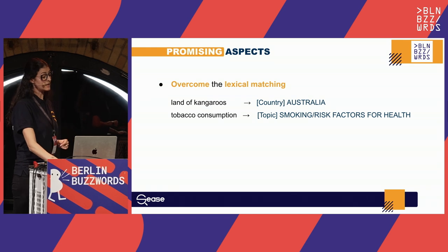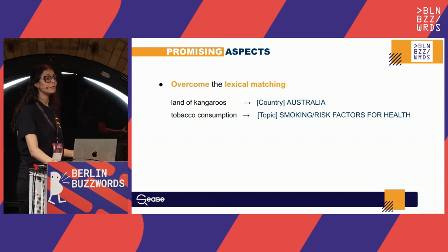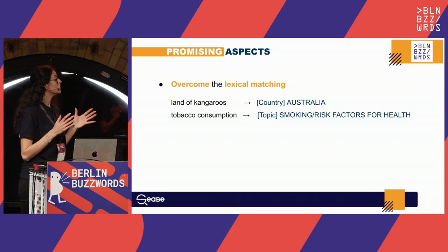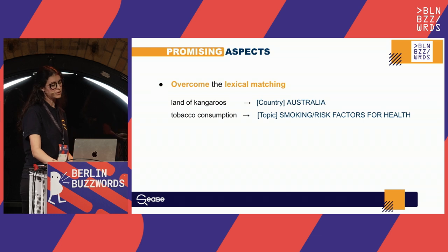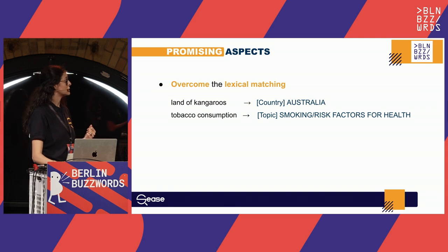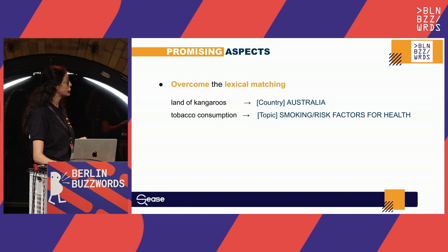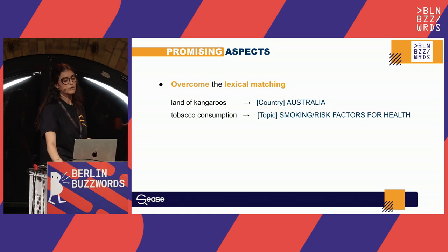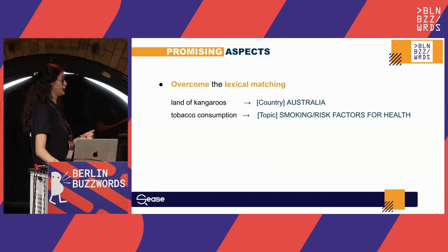Regarding promising aspects: using this approach, we can overcome lexical matching limitations. Large language models confirm their ability to map query terms to related content in our Solr corpus. For example, given the query 'land of kangaroos,' the model understands we are talking about Australia, identifying the relevant field as 'country' and selecting the value 'Australia.' For the query 'tobacco consumption,' the model identifies the relevant field as 'topic' with relevant values 'smoking' and 'risk factors for health.'